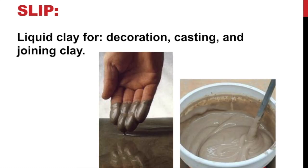Slip is an important term because we deal with it all the time. Basically, slip is just liquid clay — you take clay, add water, water it down until it's liquidy, and that's slip. We mainly use it for joining clay, but you can also use it for decoration or slip casting. We've done that before where we had molds and cast objects using slip.